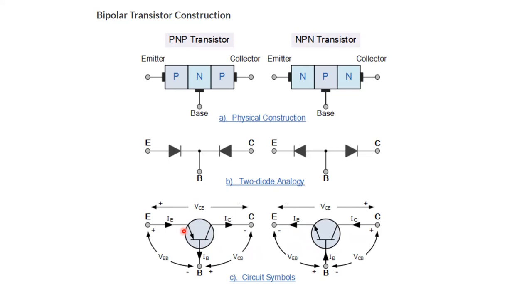If you think about diodes, which we have studied so far, you can consider a transistor as analogous to a collection of two diodes. In case of PNP this is the configuration, and in case of NPN this is the configuration. If the transistor type is not mentioned, you can generally consider it as an NPN transistor.